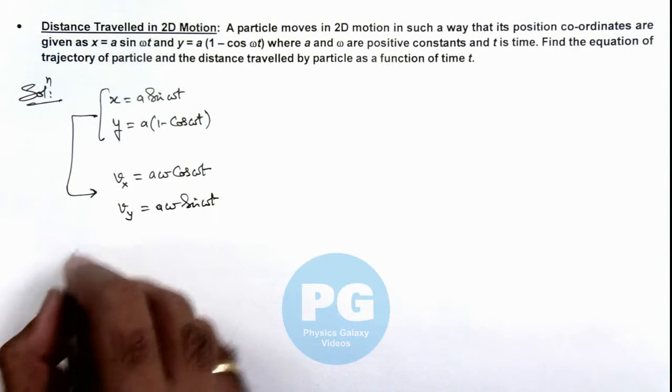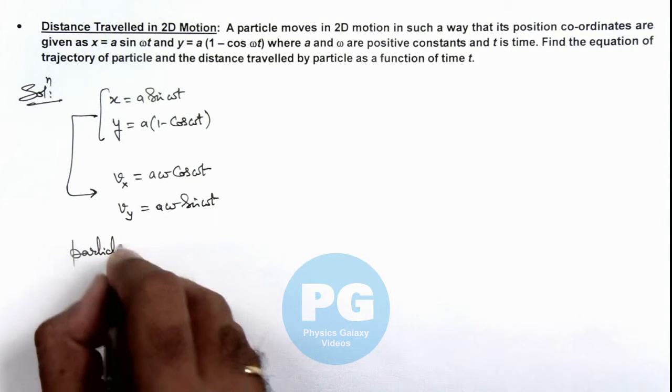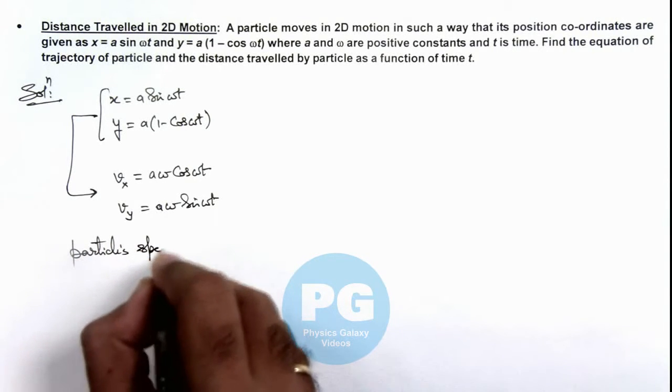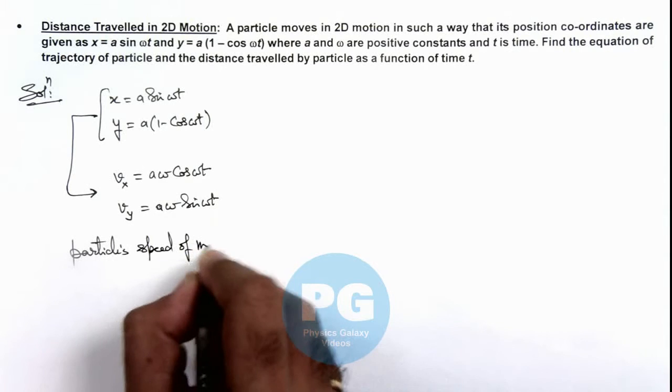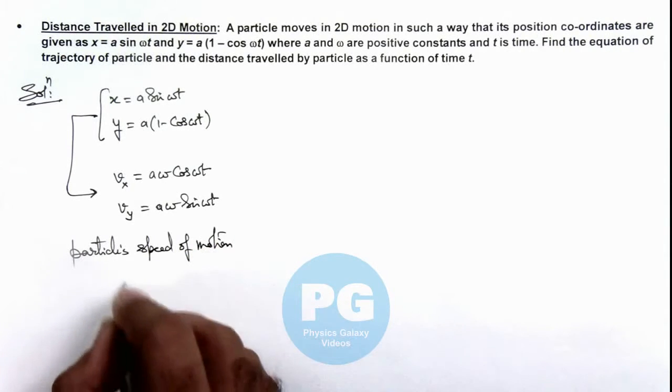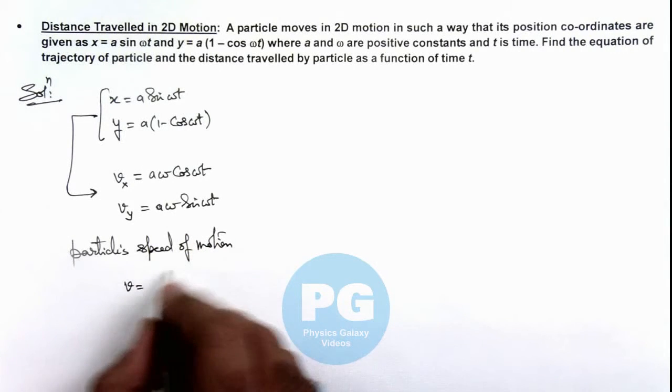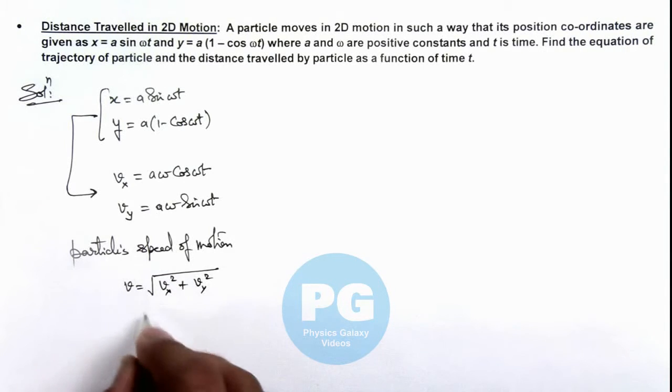So if we calculate the particle's speed of motion, we can write the magnitude of velocity or speed as root of vₓ² + vᵧ². Squaring and adding these two terms will result v = aω.